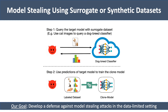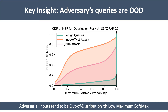Recent attacks use synthetic or surrogate data to carry out model stealing when training data is unavailable to the adversary. Our goal is to develop a defense against such attacks. Our key insight is that existing model stealing attacks invariably use out-of-distribution data to query the target model. Such out-of-distribution queries produce low confidence predictions compared to benign queries.